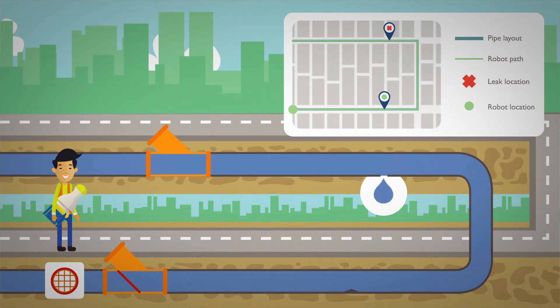So this is the MIT leak detection robot, the solution for mapping out water pipe leaks in your city.